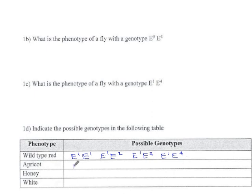If it's apricot, that means the most dominant thing it has must be the apricot allele, E², and that could be matched with a 2. Or a 3, or a 4.